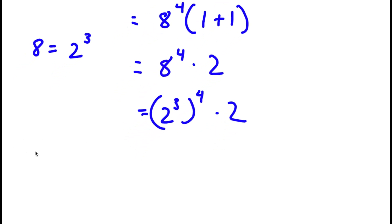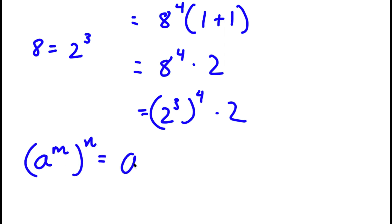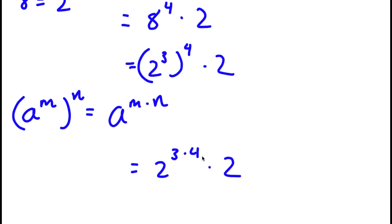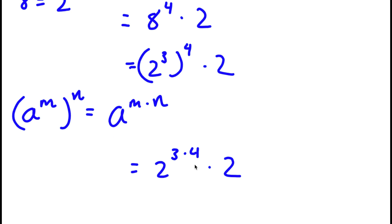Now, if I have something in the form a to the power of m to the power of n, this is equal to a to the power of m times n. So in this case, 2 to the power of 3 to the power of 4 is going to equal 2 to the power of 3 times 4, and 3 times 4 is simply equal to 12.